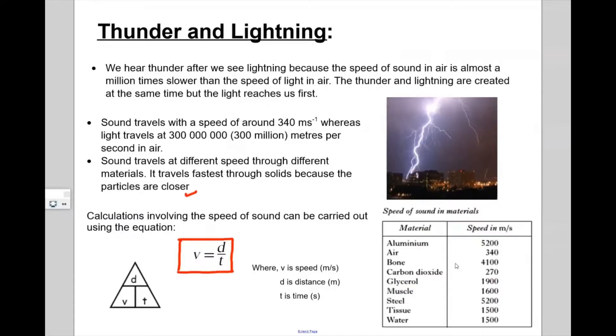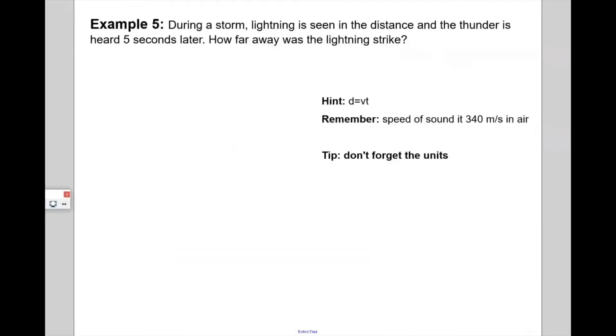And these are some of the speeds of sound in different material. So in water you can see it is 1500 meters per second whereas in aluminium it is much faster, 5000. Aluminium is a solid and it travels much faster.